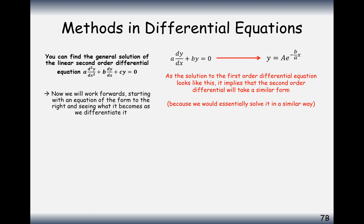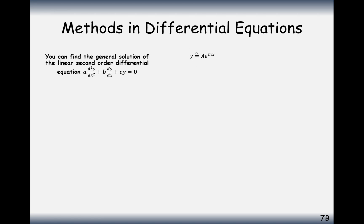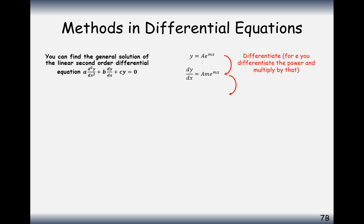We'll work forward starting with an equation of the form y equals A e to the mx, which we think the solution will look like. Since a, b and c are just numbers multiplying y, the first derivative, and the second derivative, we differentiate our proposed solution. Differentiating once gives A m e to the mx, and differentiating again gives A m squared e to the mx.